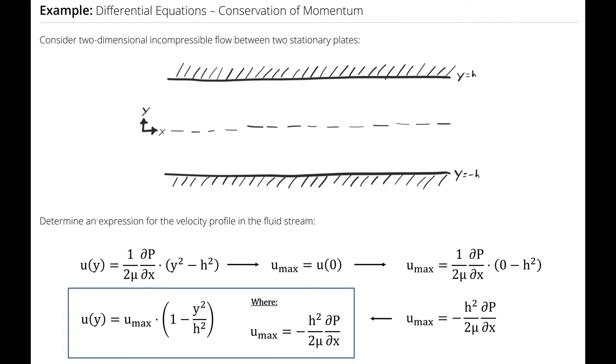If you're wondering why there's a negative out front, it's because the velocity is developed in the opposite direction as a positive pressure gradient.